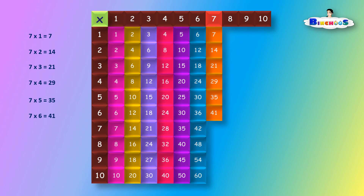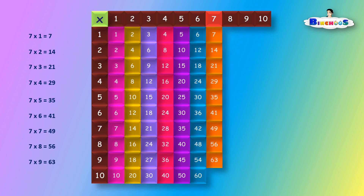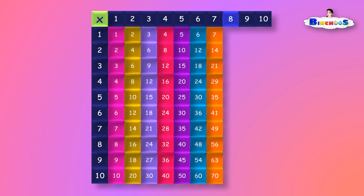7 times 6 is equal to 42. 7 times 7 is equal to 49. 7 times 8 is equal to 56. 7 times 9 is equal to 63. 7 times 10 is equal to 70. Multiplication of 8.